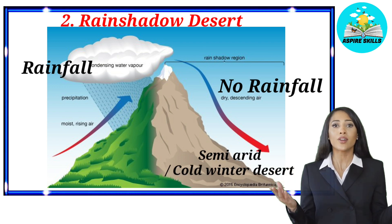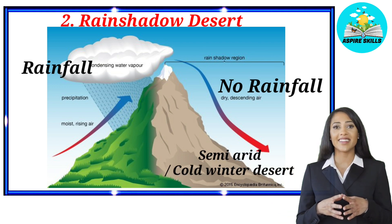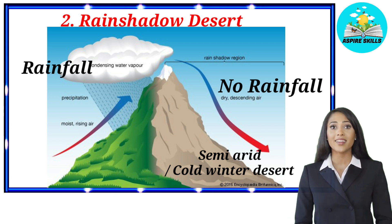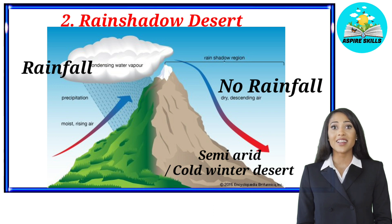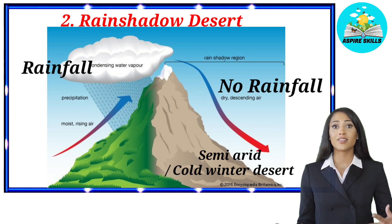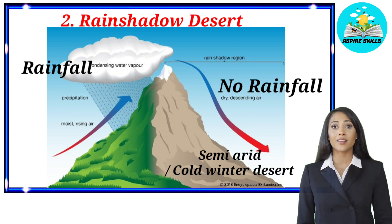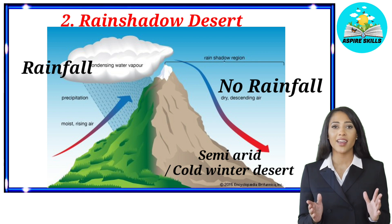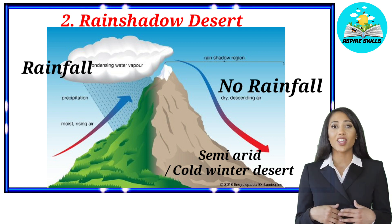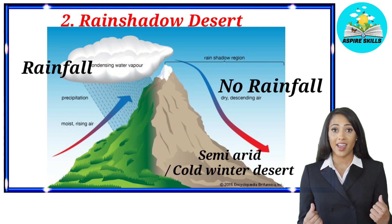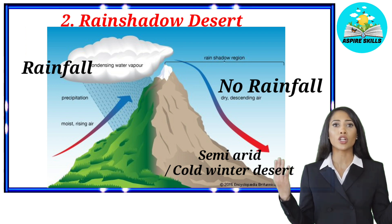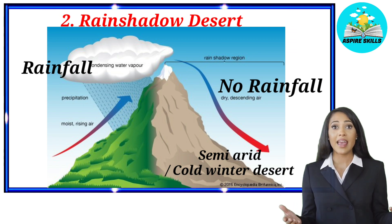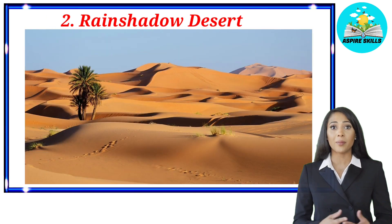Semi-arid and cold deserts are found on the leeward side of the mountain, also known as rain shadow deserts. When moisture hits a mountain range, it is forced to rise. As a result, the air cools and forms clouds, which drain on the windward side of the mountain. After that, the air moves over the mountain top and begins to descend on the other side with very little moisture left. That descending air warms up, making it difficult to form clouds, and hence there is no rain on the leeward side, so that region becomes a desert.